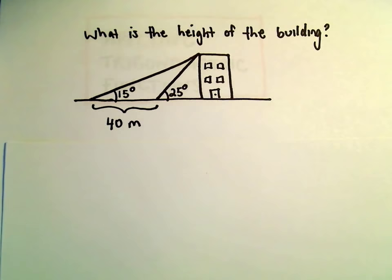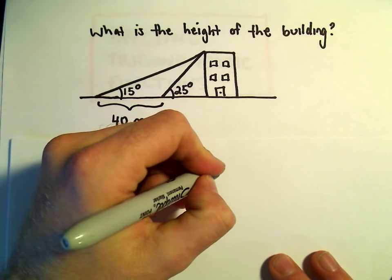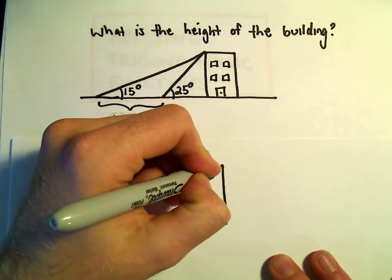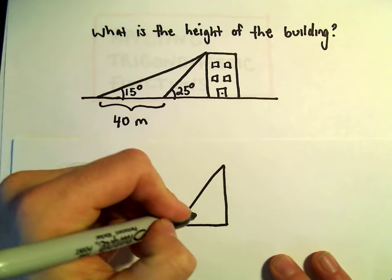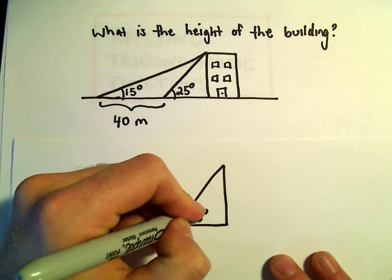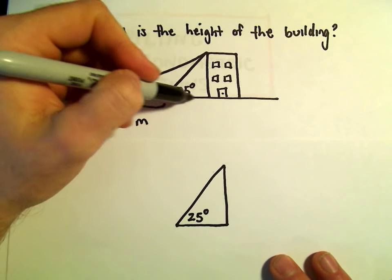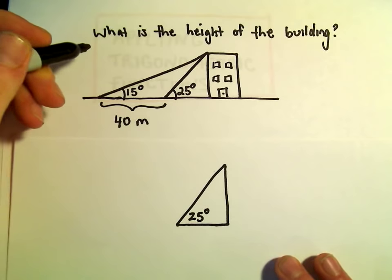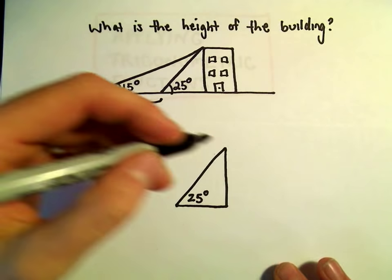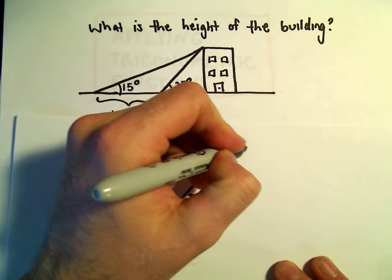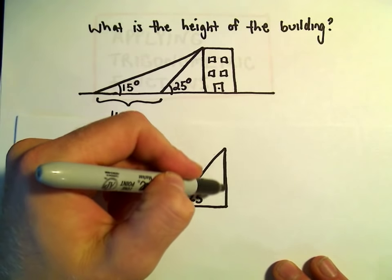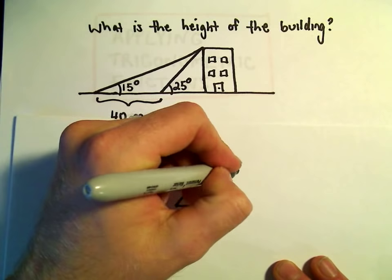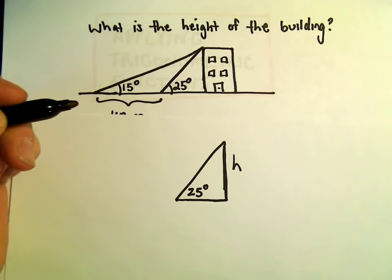So this is going to take a couple steps here for sure. Not just a one step problem by any stretch. Alright, the first thing I'm going to do is look at this 25 degree triangle. So we're trying to figure out the height of this building. So our building, here's the left edge of the building. Let's call that h for height.